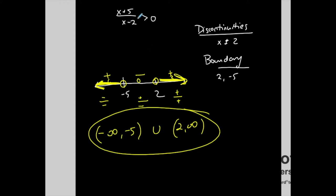To summarize: find the discontinuities and find all values that make the numerator zero, put them on a number line, test to make sure everything satisfies the inequality symbol, and always have zero on the right-hand side first.